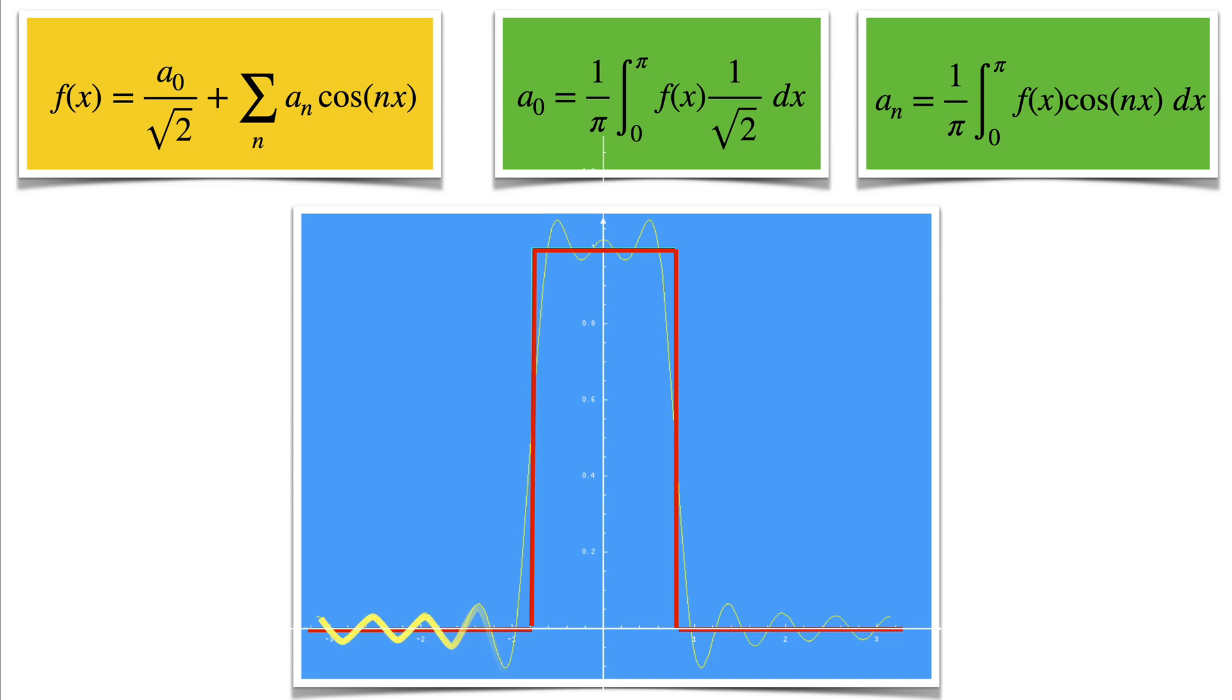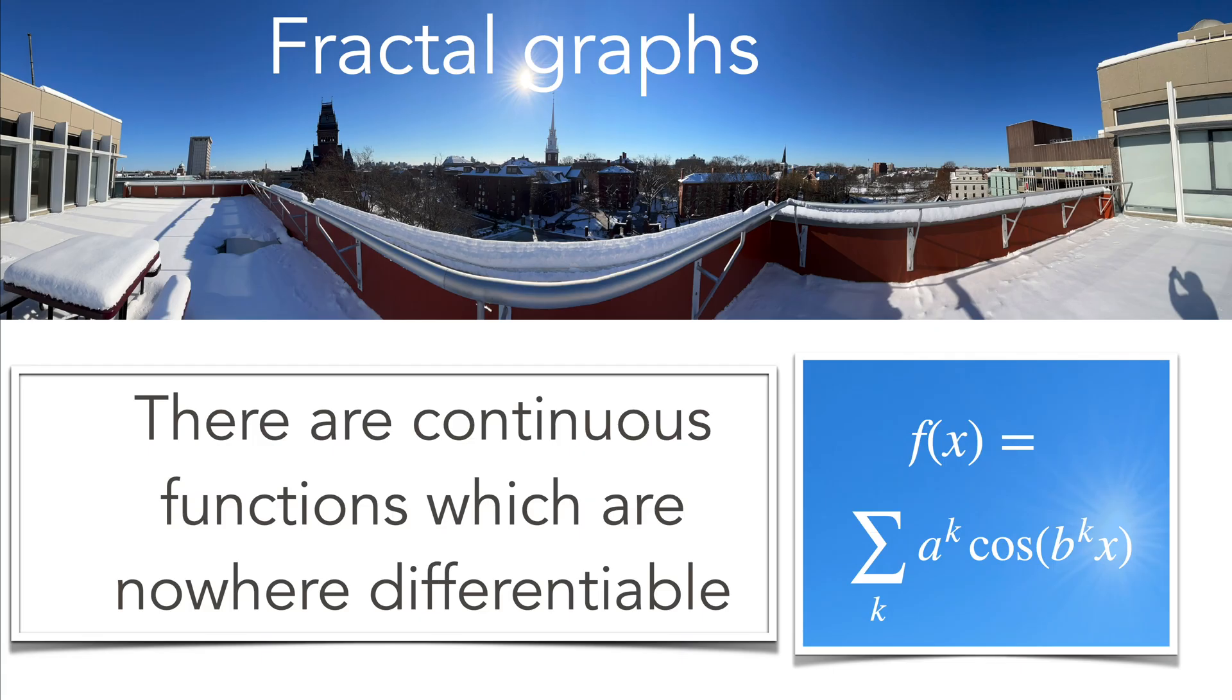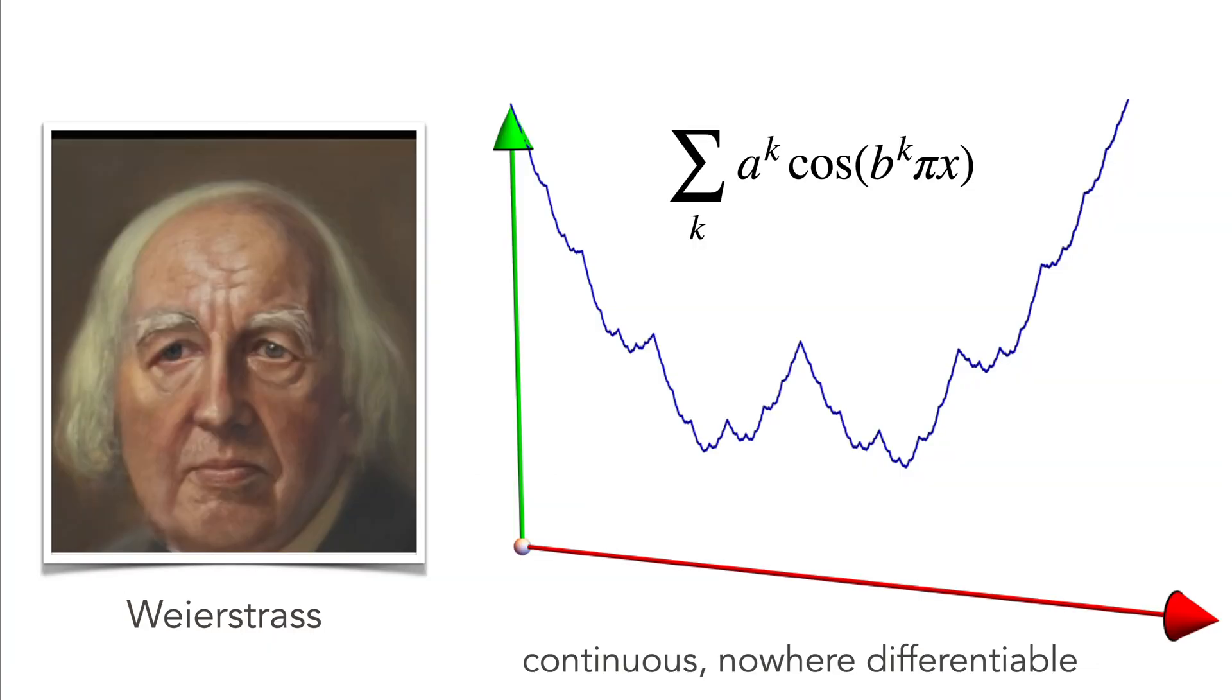Here we have even functions. You can use Fourier series also to find functions which are continuous but nowhere differentiable. This was Weierstrass who first found such examples.